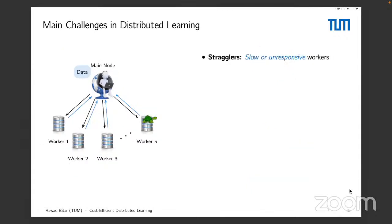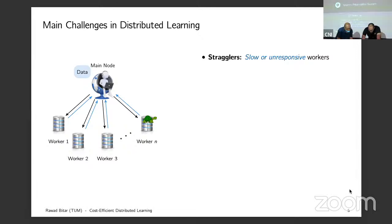What are the challenges of the main-node-worker setting? The main ones are: first, stragglers — slow or unresponsive workers. You might ask what's the probability of one worker being slow, but if you scale up distributed learning and one worker can be slow with one percent probability, then at least one worker will be slow with about sixty percent probability. So it's a problem we need to take care of, and this is one of the things I focus on.